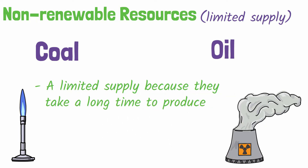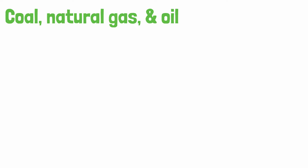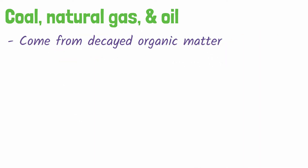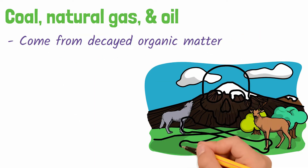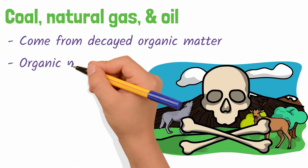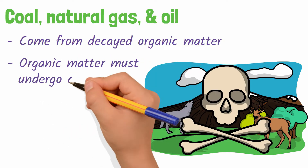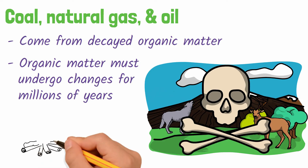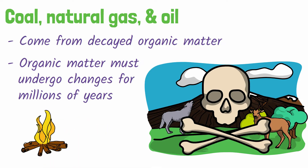Coal, natural gas, and oil all come from decayed organic matter, like dead plants and animals. But in order to become an energy resource, this organic matter must undergo changes for millions of years, usually involving heat and pressure in the Earth's surface.